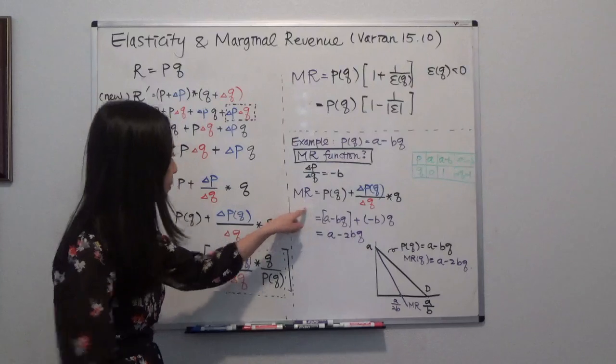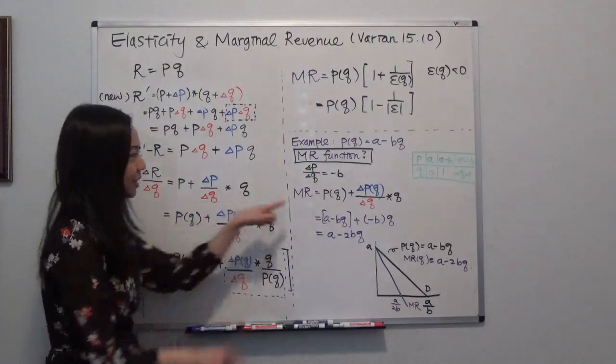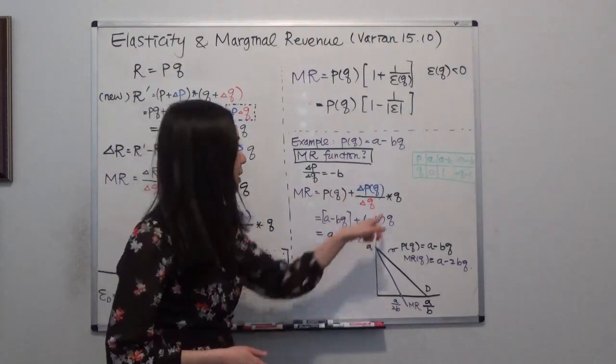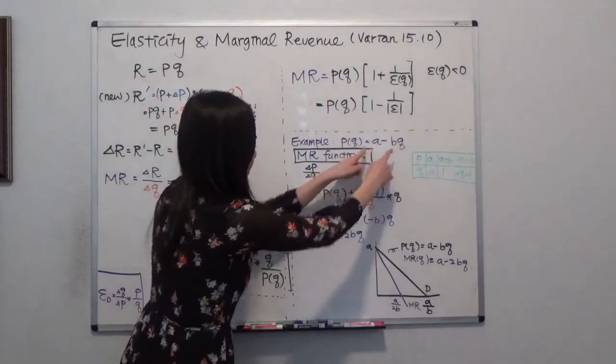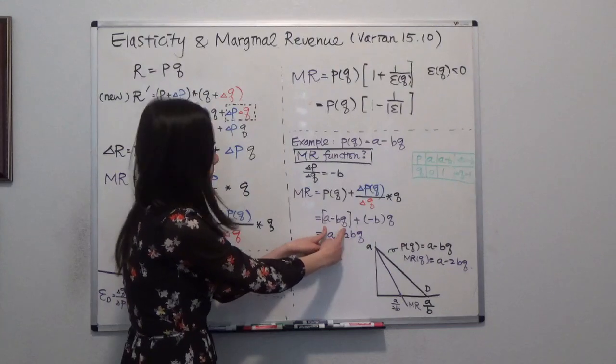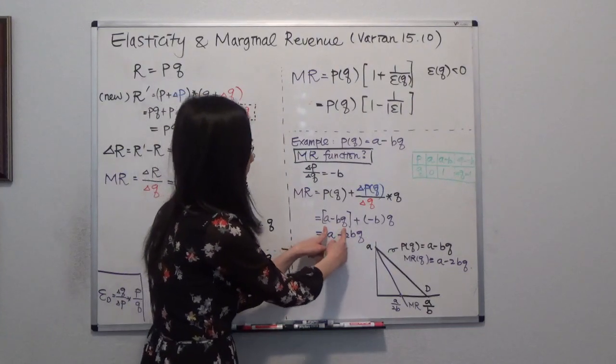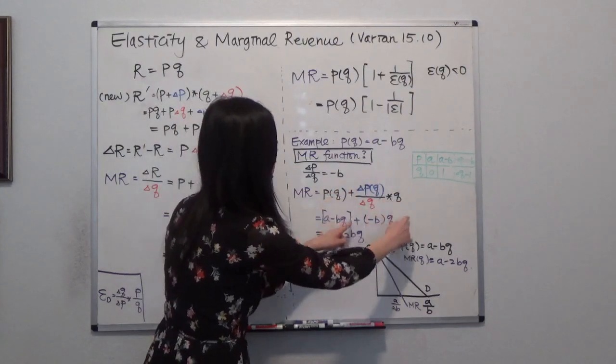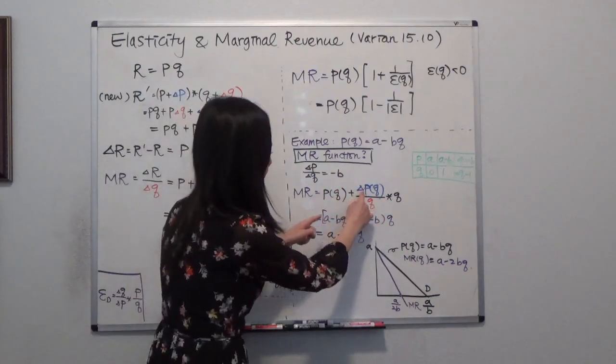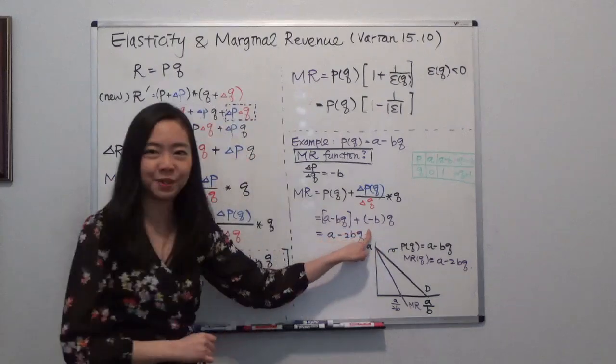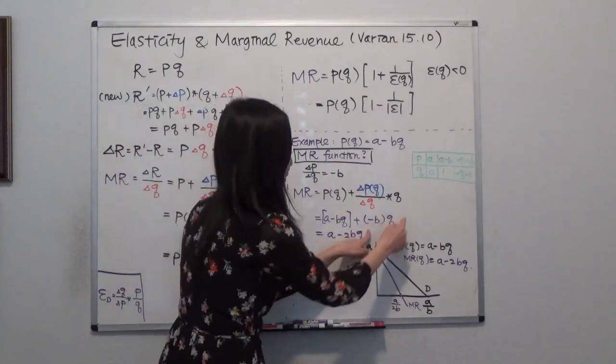So marginal revenue, again, is here. It's price plus delta P divided by delta Q times Q. And we can plug this P in here. That's just a minus bQ. And we're going to plus this term. So what is this term? When the delta P divided by delta Q, we already found that that's negative b times Q.